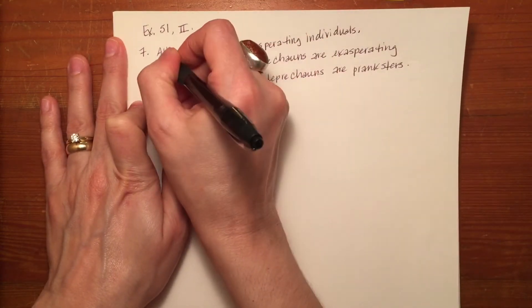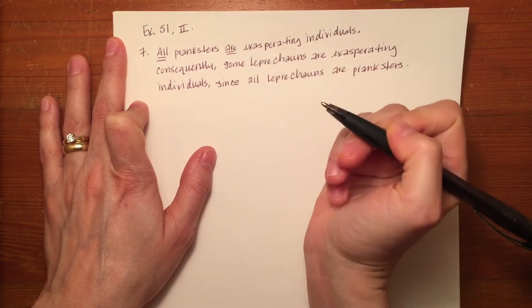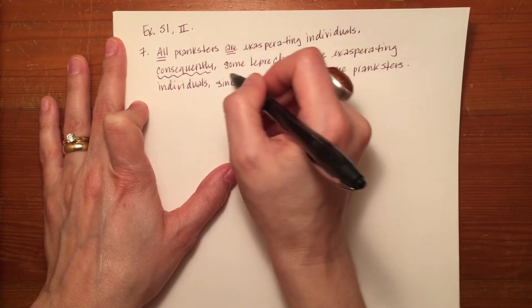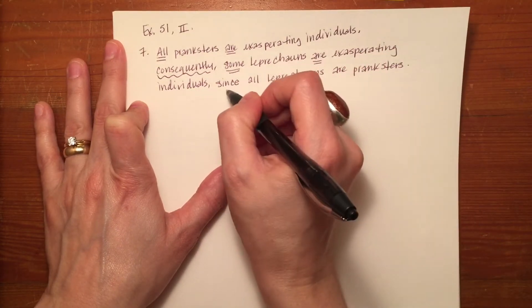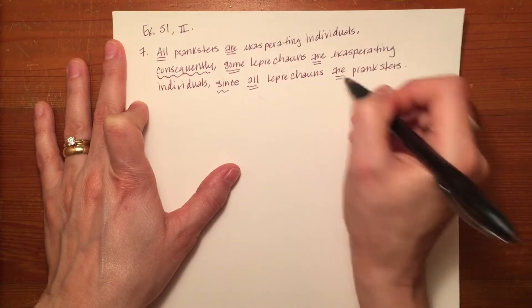So moving forward, we're going to find the standard form here. We've got all are, consequently is our conclusion indicator, then we've got some are, and then another since, which is a premise indicator, and then all are.